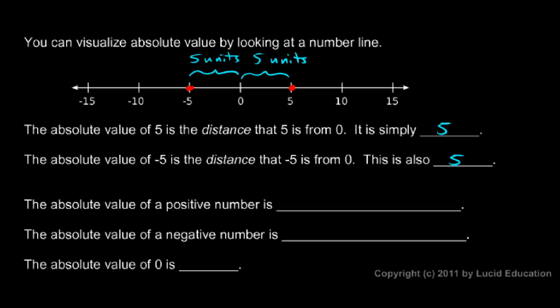The absolute value of a positive number is always that number. The absolute value of a negative number is its opposite. So the absolute value of negative 8 would be 8, the absolute value of negative 50,000 would be 50,000, and the absolute value of 0 is 0. The absolute value of a number doesn't depend on the sign — it depends only on the number's distance from the origin. That's how absolute value is defined.